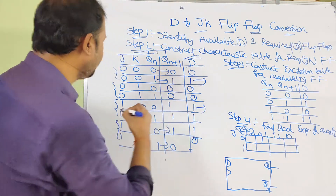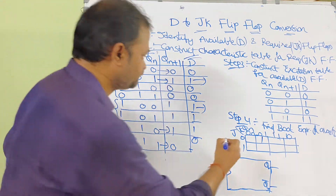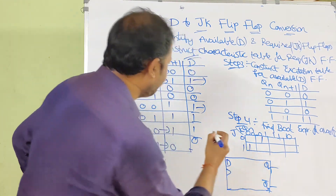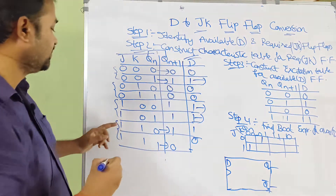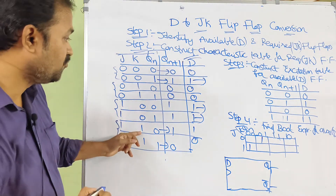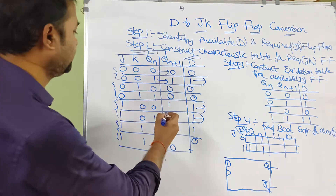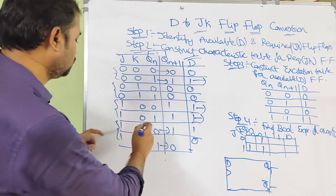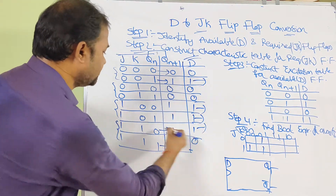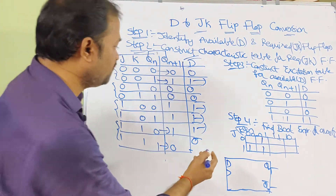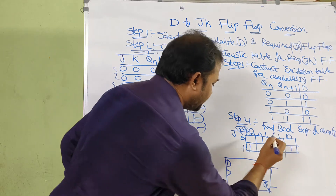Continuing to fill the K-map: we identify groups of 1s. We can combine certain two cells as one group, and combine another pair of cells as a second group.